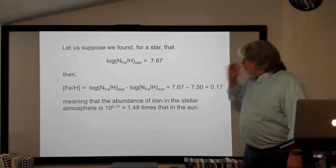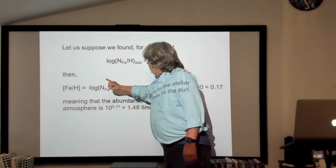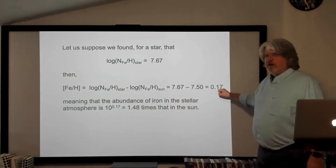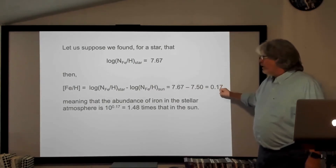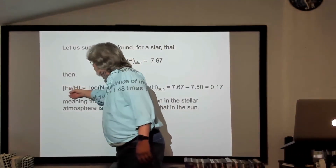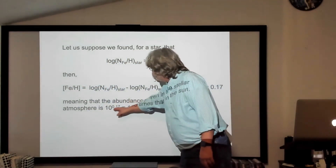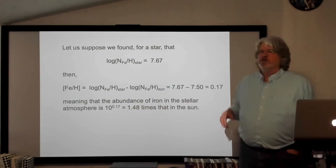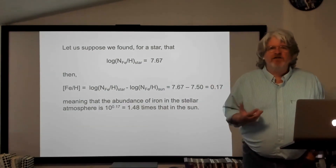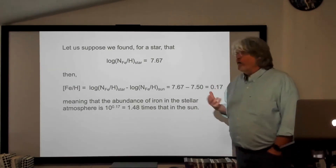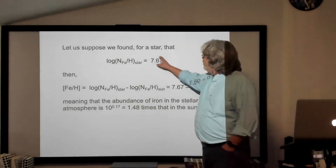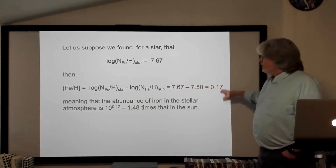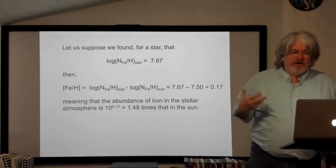The star is 7.67 and the sun is 7.50, so the difference is 0.17. Remember, this is logarithmic — bracket Fe over H of 0.17 means 10 to the 0.17, or about 1.5 times the number of iron atoms per hydrogen atom compared to the sun. So this star has about 50% more iron atoms per hydrogen atom than the sun does. That slight difference of 0.17 is actually pretty significant because we're working in logarithms.